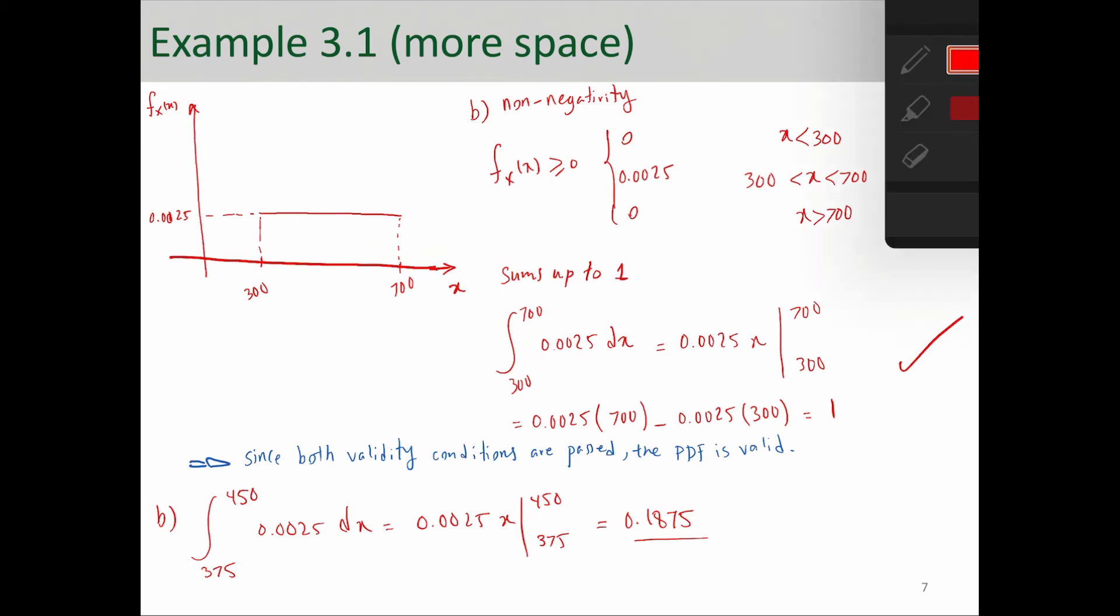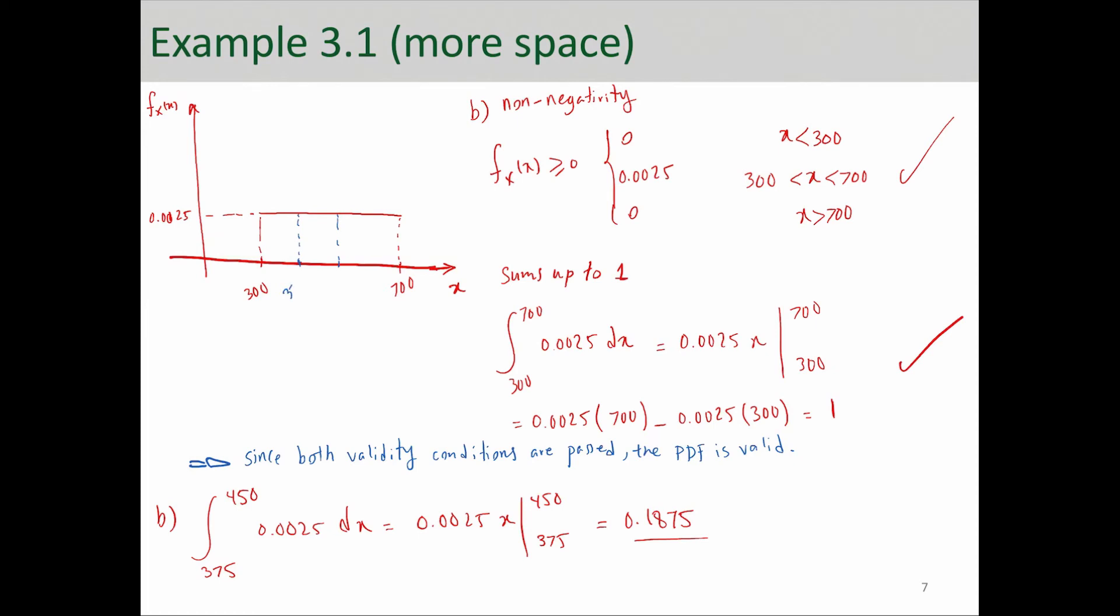I want to mention here that instead of doing it with the integration, you could solve this geometrically because the PDF function is so simple that allows you to solve this geometrically. So, you're essentially looking at 375 and let's say here 450, right?